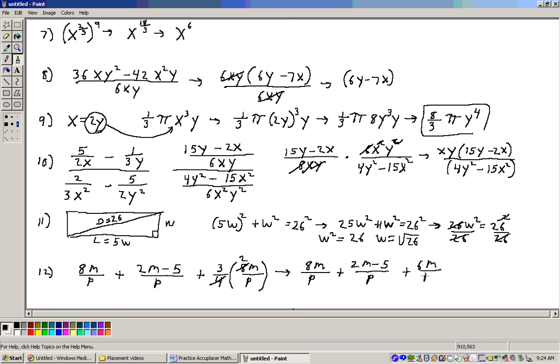4 goes into 8 two times, so that would be 6m over P. Now this one has a common denominator, so all we have to do is add these up. So 8m and 2m is 10m. 10m plus 6 more gives me 16m. And I have a minus 5 on the top over P. And that would do it right there. That's what all those added up are.